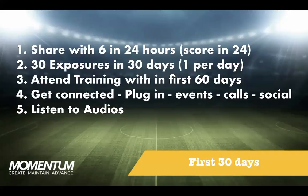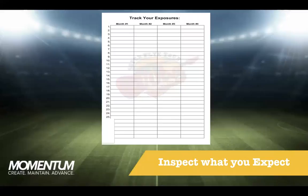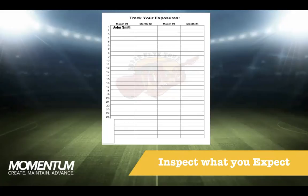The next step is to understand the exposures. This is where you finally share it with people — we call that an exposure, and this is where we make our money. This part of the focus board is where you start to track your business. You have month number one, two, three, and four. In month one, you write down names as you expose them — for example, John Smith on day one, Sally Green on day two. It doesn't matter whether they say yes or no; what matters is that they saw a proper presentation. One exposure every day for 30 days is the goal.